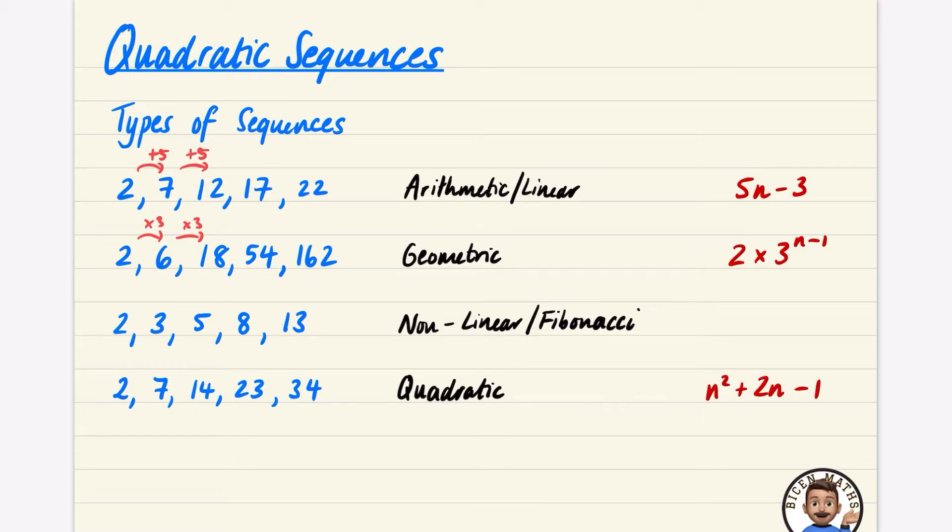You've also got some non-linear or in this particular case a type of Fibonacci sequence. The nth term of this is a bit difficult to define. It's much easier to define by positions, so to find this position you add up the two previous ones. Five equals two plus three, eight equals three plus five, and thirteen equals five plus eight. You cover these recurrence relations in more detail at A-level, but we're not going to tap into that right now because it goes beyond the course.